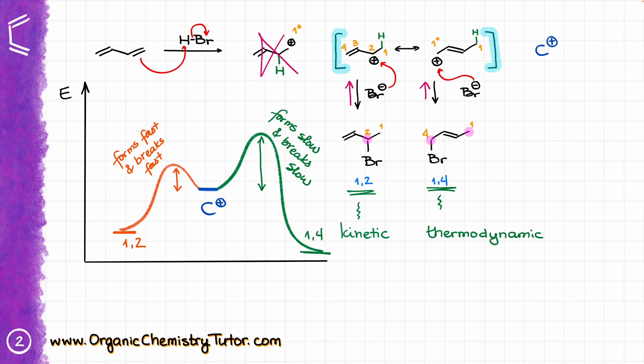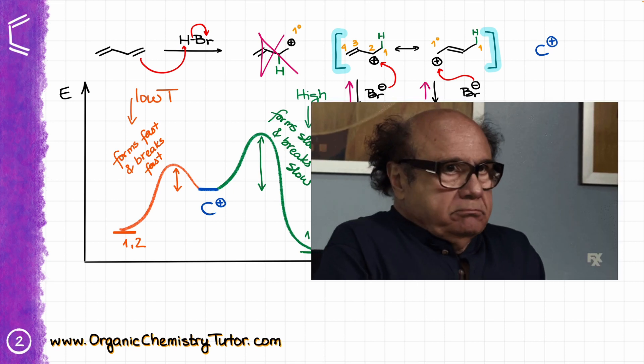With time, we accumulate the thermodynamic product and lose the kinetic product. So if we stop the reaction quickly or do it at low temperature, we predominantly get the kinetic product. But if we give the reaction time to reach equilibrium or do it at higher temperature, we predominantly get the thermodynamic product. Remember: low temperature means the kinetic product, high temperature means the thermodynamic product.